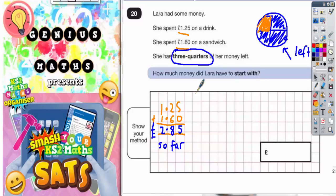So this means that the £2.85 must be what she's spent so far. So £2.85 spent so far and she's then got three quarters of it left. Now if the £2.85 is worth one quarter of the total money that she had...